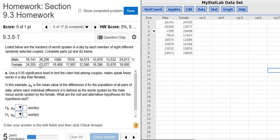In this problem, we're going to do a hypothesis test using paired data in StatCrunch. We have couples, and these are the words that the couples speak in a day. So for example, this first couple here, this male spoke 16,141 words, and the female spoke 24,355 words. And then over here, this is another couple, et cetera.